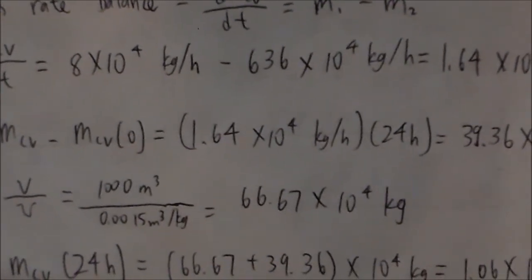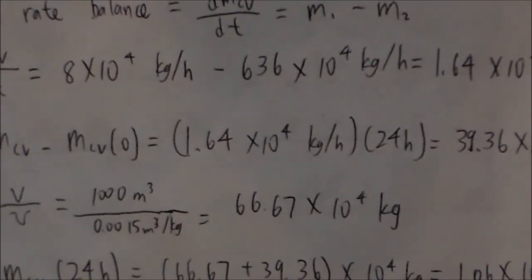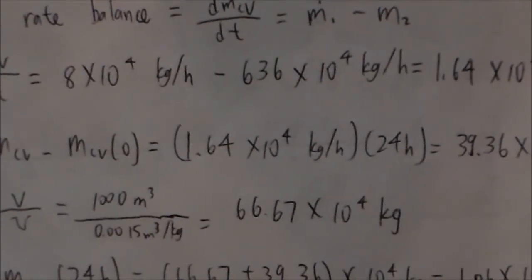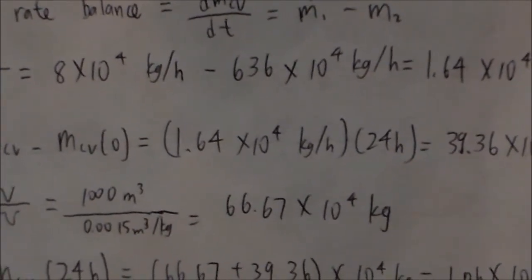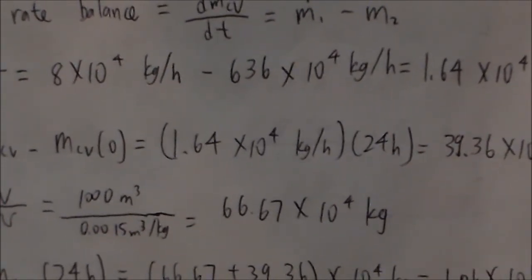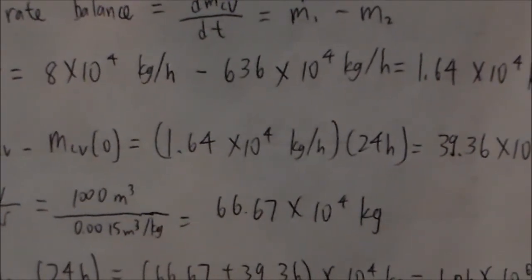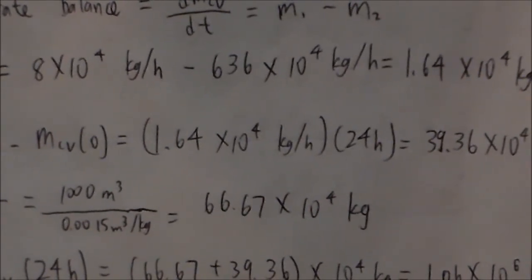The mass of the system after 24 hours is equal to the change in mass plus the initial mass, and that is 1.06 times 10 to the 6 kilograms.